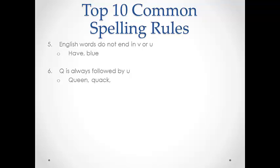The fifth common spelling rule is fairly straightforward. English words do not end in V or U, so students can use this rule to remember that if they hear V, U, or OO at the end of a word, something will have to follow.